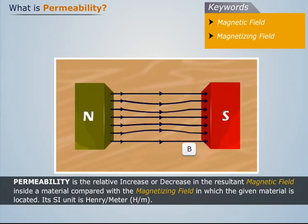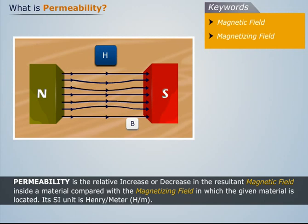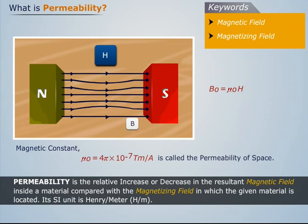If a uniform field of strength H is established in air or vacuum, then the corresponding flux density developed in the air will be where the magnetic constant mu naught is called the permeability of space.